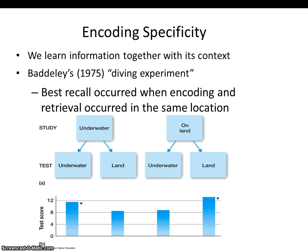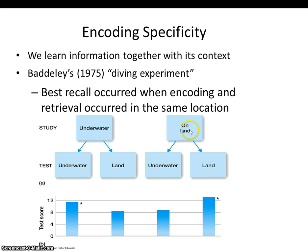The results showed that when people studied and were tested underwater, memory was pretty high. But when they studied underwater and were tested on land, memory was lower. Similarly, when they encoded words on land but were tested underwater — a mismatch — memory was lower. When both learning and testing occurred on land, memory was again higher. The locations have to match in order for memory to be at its highest.